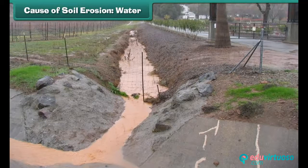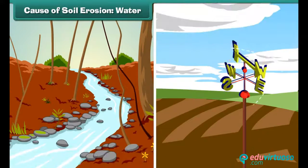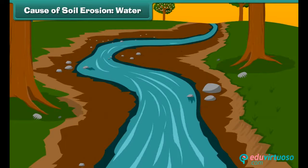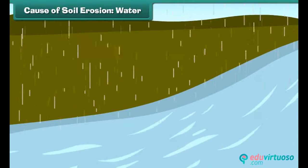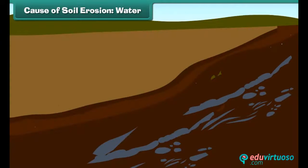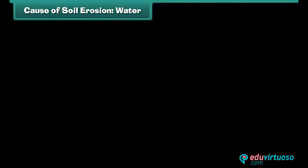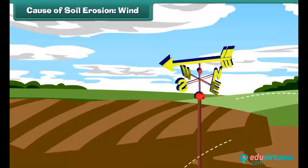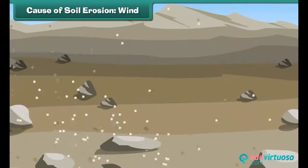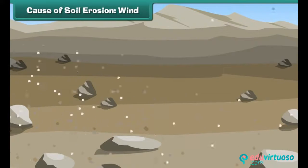Come, let us know the factors which cause soil erosion. The most common factors are water and wind movements. Water flowing through the ground carries away soil with it. During rain, soil particles are detached by raindrops and carried away by running water. Floods are also a main cause behind soil erosion.